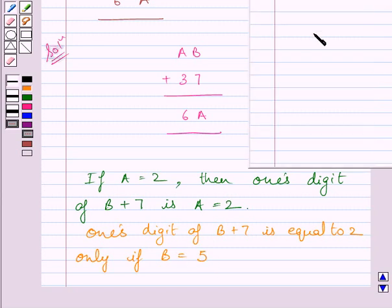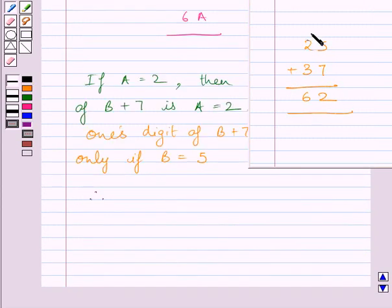Now when A is 2 and B is 5, we get 25 plus 37 equals 62. So the value of A is 2 and the value of B is 5.